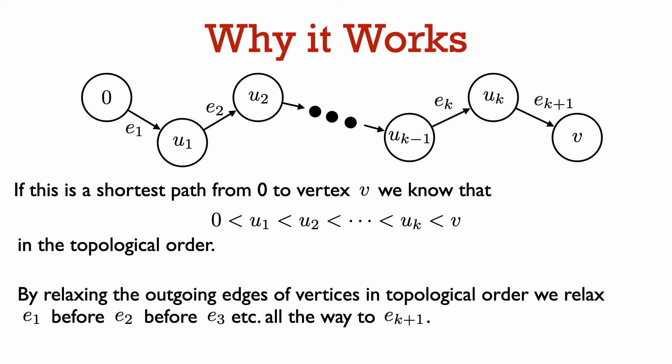Now let's see why this algorithm works. Suppose that this is a shortest path from vertex 0 to vertex v. Then we know that in the topological sort of this graph, 0 will be less than u1, which will be less than u2,